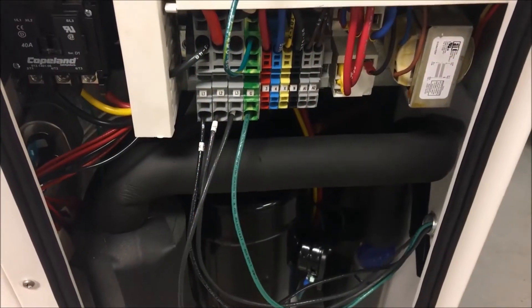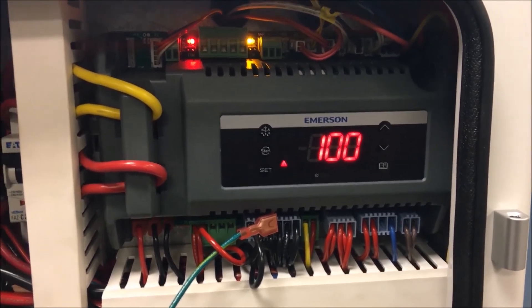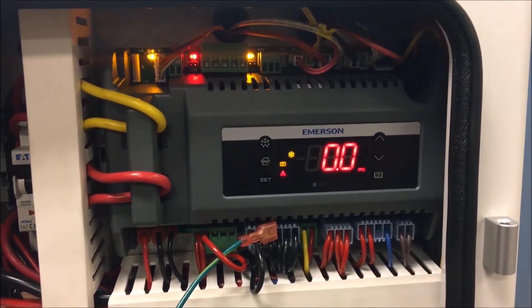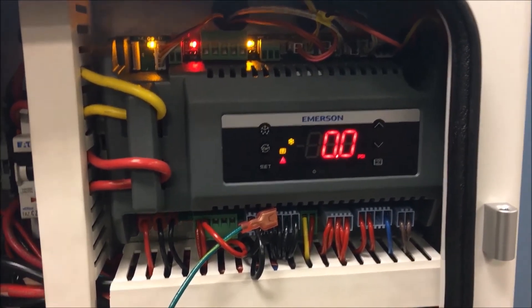So once all the power connections are made, now you can turn on power to the system. So go ahead and flip the breaker on. When we go back to the unit, you'll see that the control will go through a startup procedure. It'll show the firmware version and the history of the software and then it'll get into its startup phase.